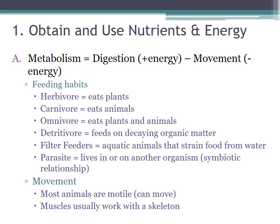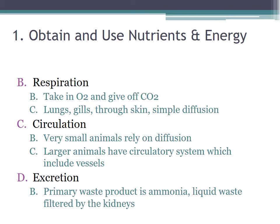Then there's movement. Most animals can move, but not all — for instance, sponges don't move. Muscles are typically used to work a skeleton to allow movement to take place. In addition to metabolism there's also respiration — taking in oxygen and giving off carbon dioxide — which can be done using lungs, gills, or through the skin via simple diffusion. There's also circulation: moving necessary materials through vessels inside the body. Finally there's excretion — how organisms get rid of waste products, whether ammonia or liquid waste filtered by the kidneys. Organisms without kidneys typically use diffusion to remove cellular waste.